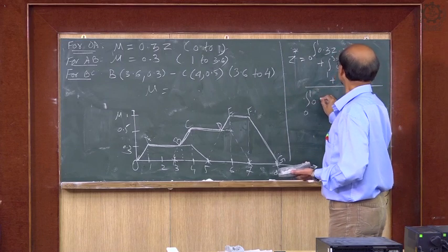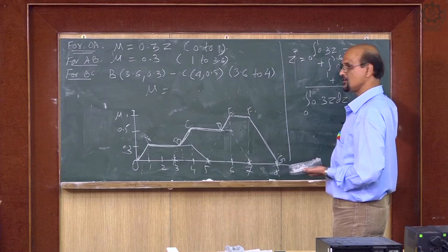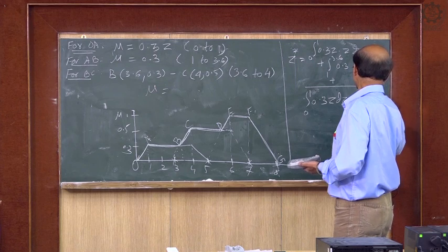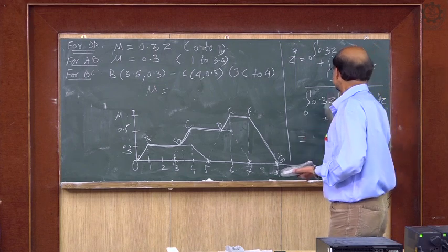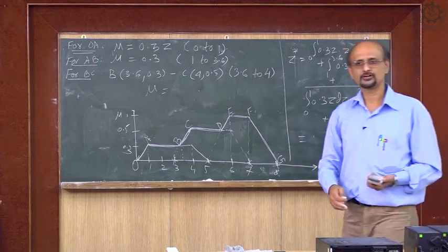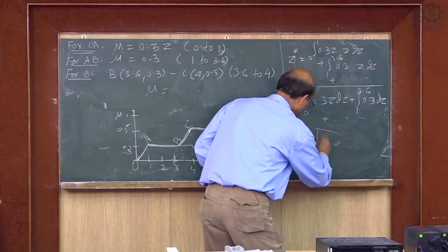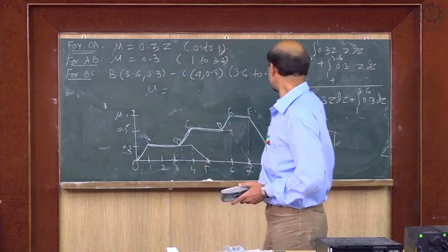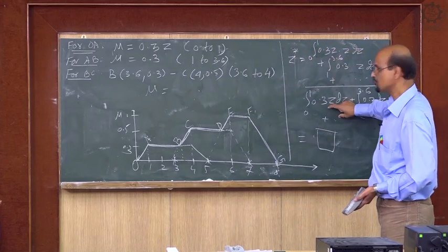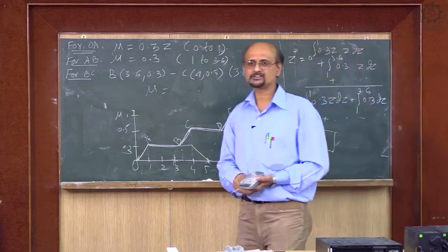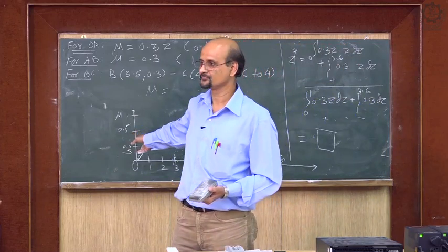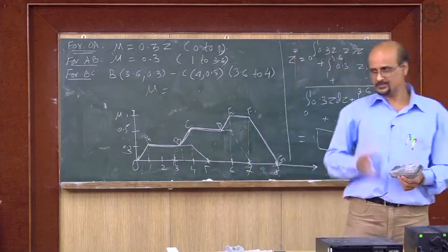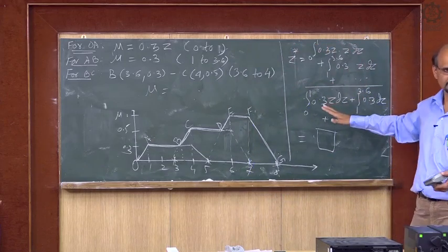The denominator is: ∫₀¹ 0.3z dz + other terms for each segment. After finding the integration for numerator and denominator and dividing, you will get a single number — that is your defuzzified value for these three fuzzy sets by the centroid method. It is simple but requires performing all these integrations.